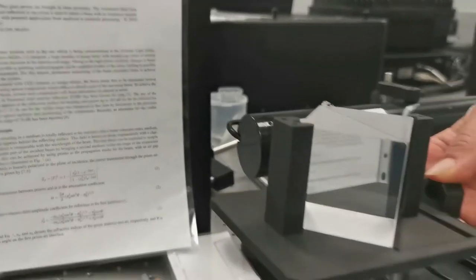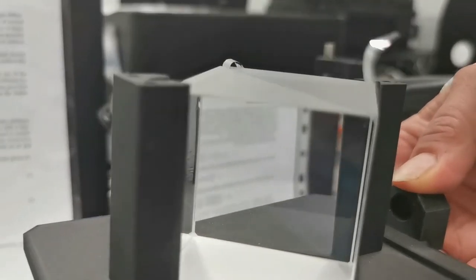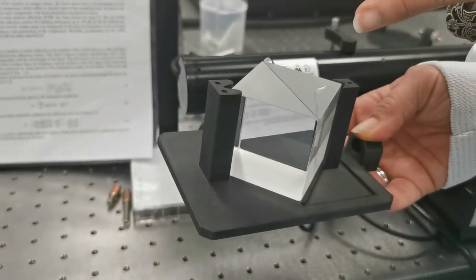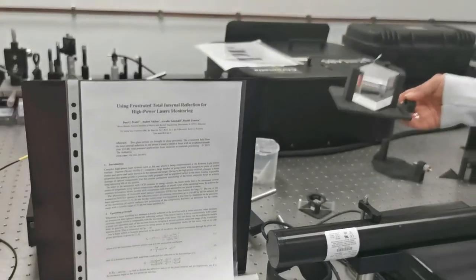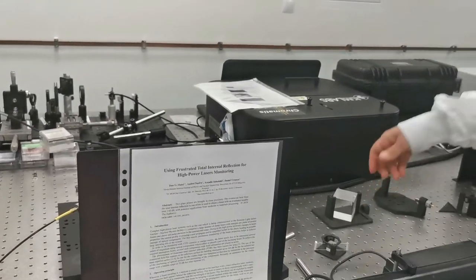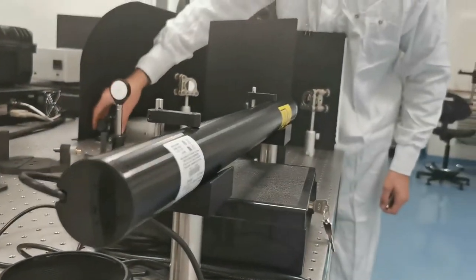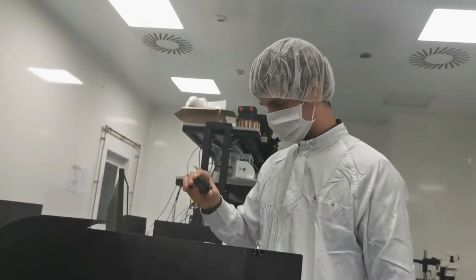Among the multiple experiments conducted in the lab, it is worth mentioning the frustrated total internal reflection. In this experiment, two glass prisms are brought in close proximity. The evanescent field from the total internal reflection in one prism is used to obtain a beam with an irradiance tunable over 110 dB with potential applications from medicine to materials processing or simply beam attenuation.